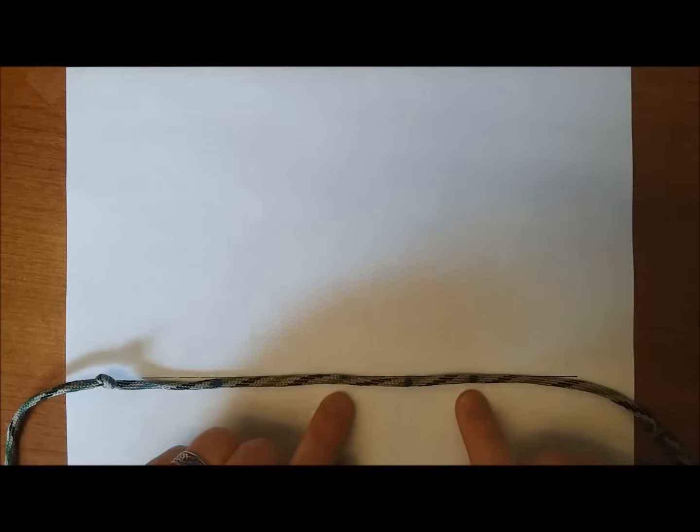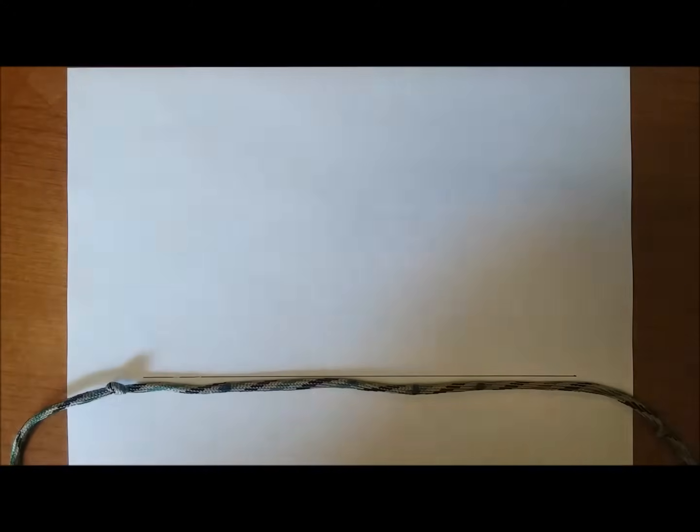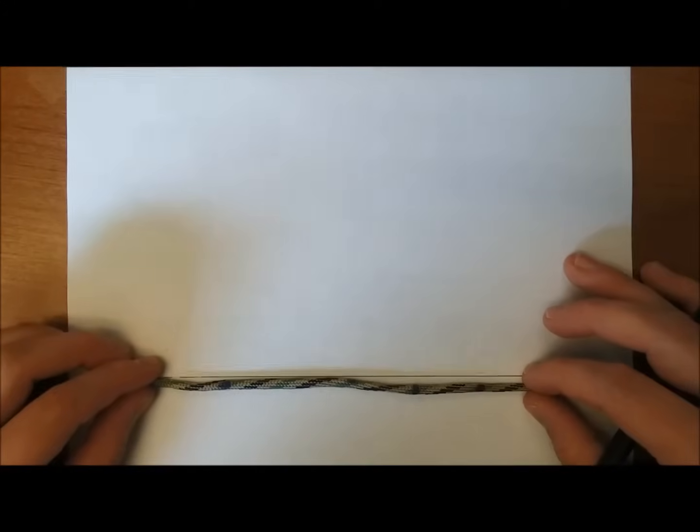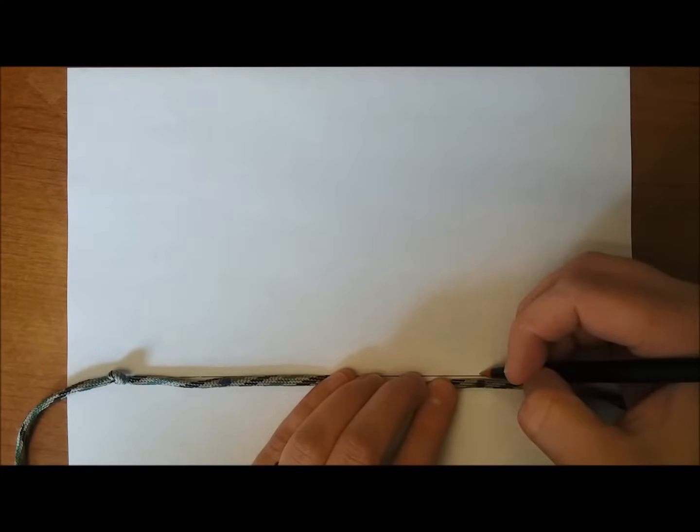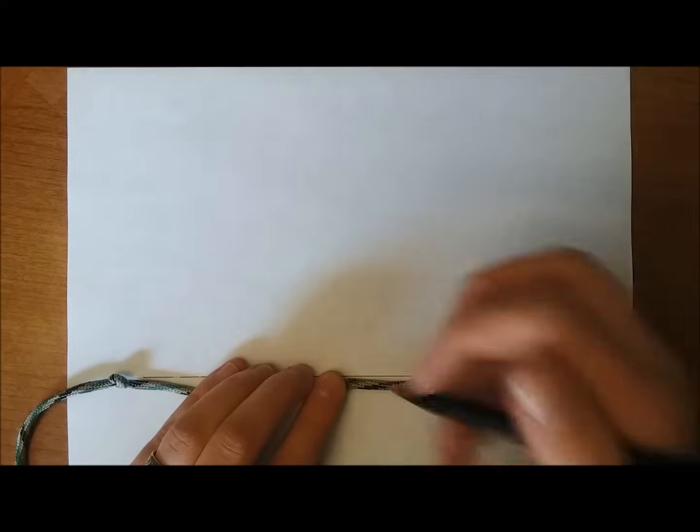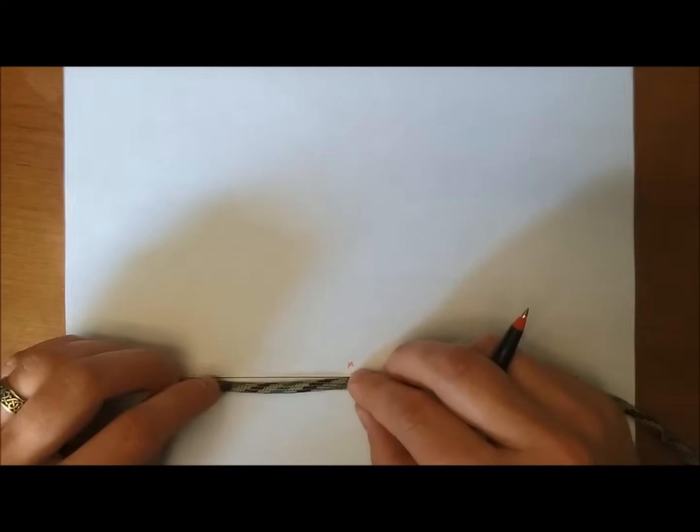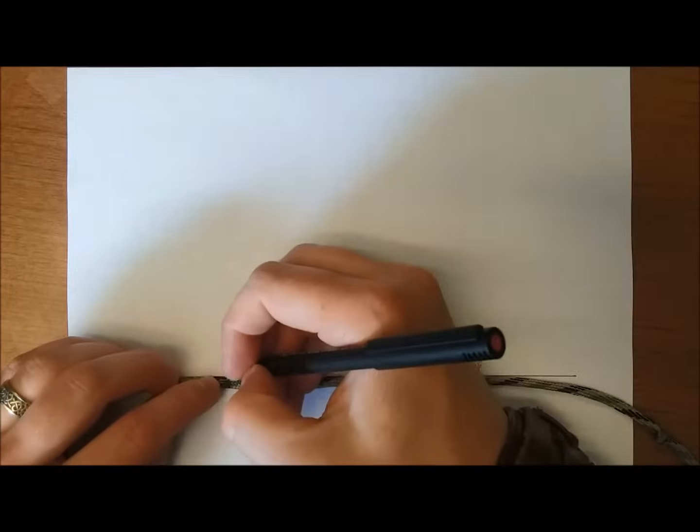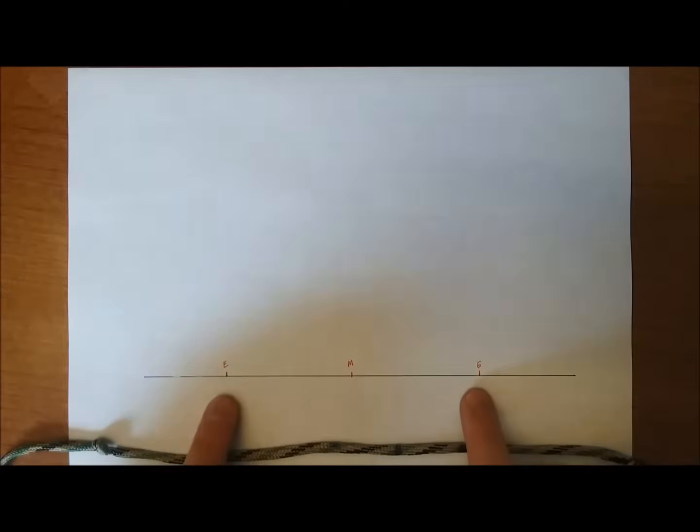We have the two ends, the midpoint, and this one between the midpoint and the end. So we're going to mark these on a line here. I'm just going to hold the rope, that's one endpoint, midpoint, and the other endpoint. So we have the width of our cathedral and the midpoint.